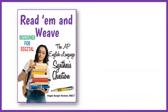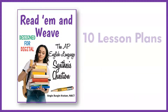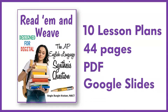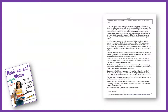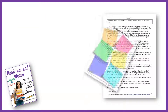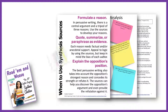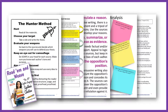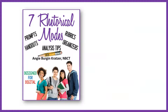Read Them and Weave, the AP English Language Synthesis question, includes 10 lesson plans and 44 pages in PDF and Google Slides. This unit includes synthesis practice, graphic organizers, anchor charts, rubrics, and handouts to go along with the detailed lesson plans.